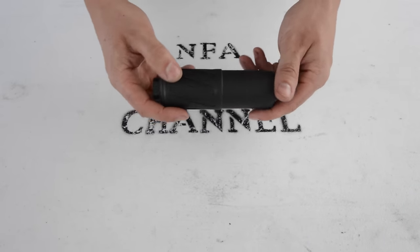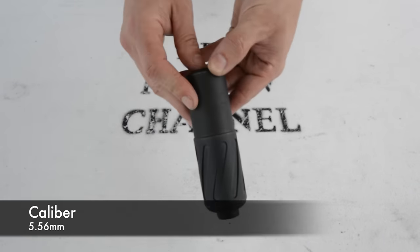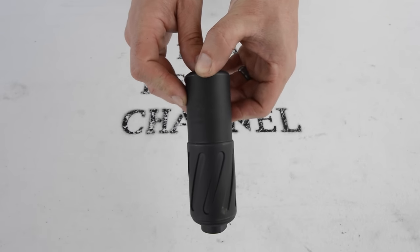It is constructed of stainless steel with a monocore baffle stack. It is a 5.56 caliber suppressor.